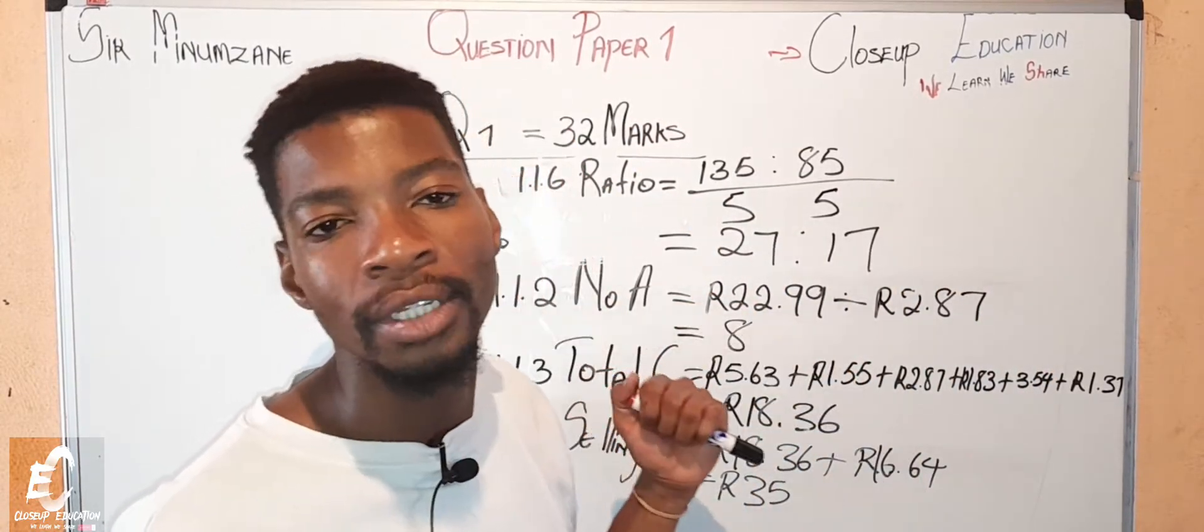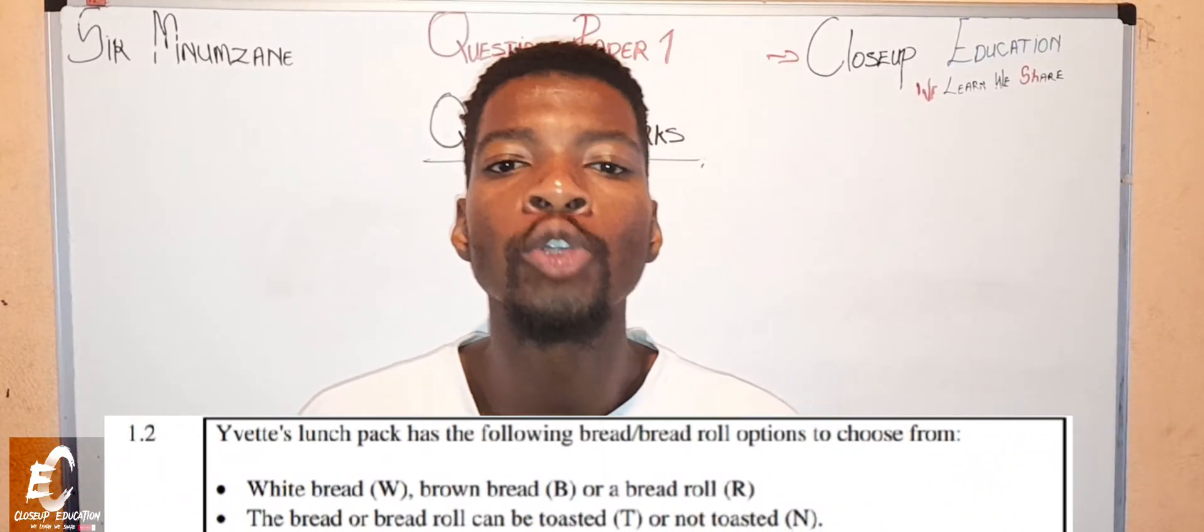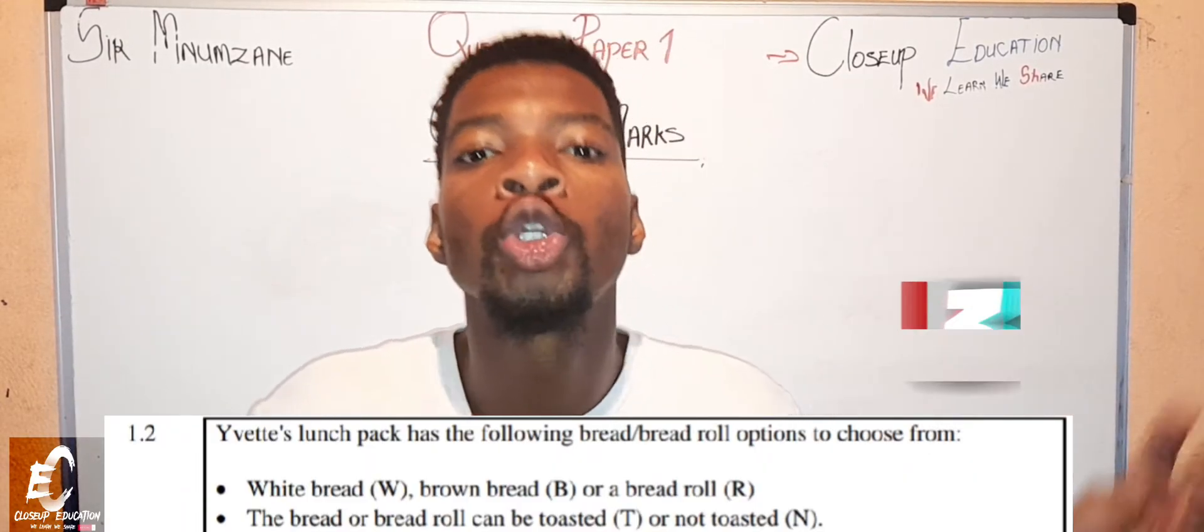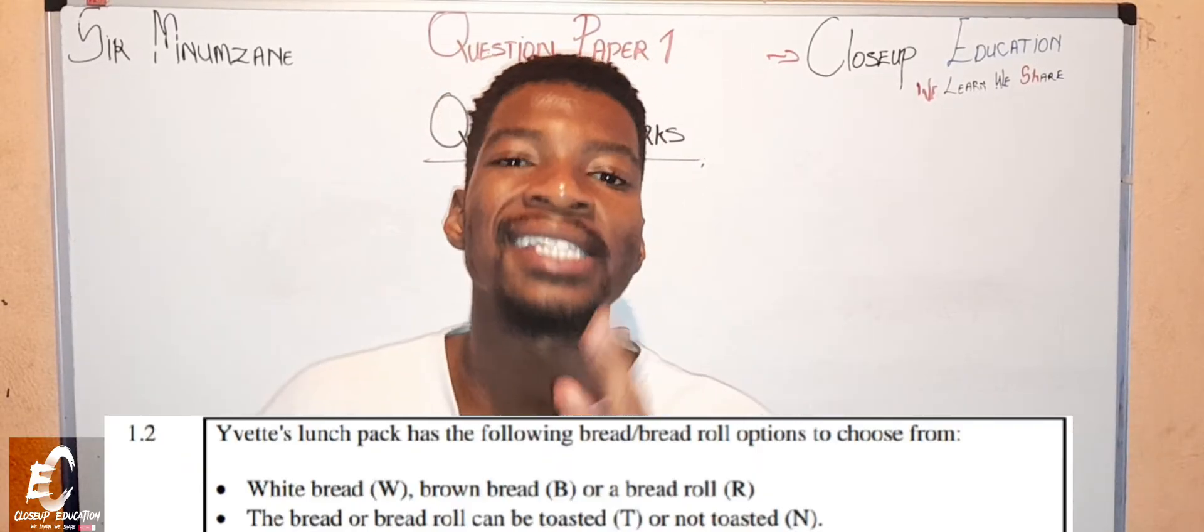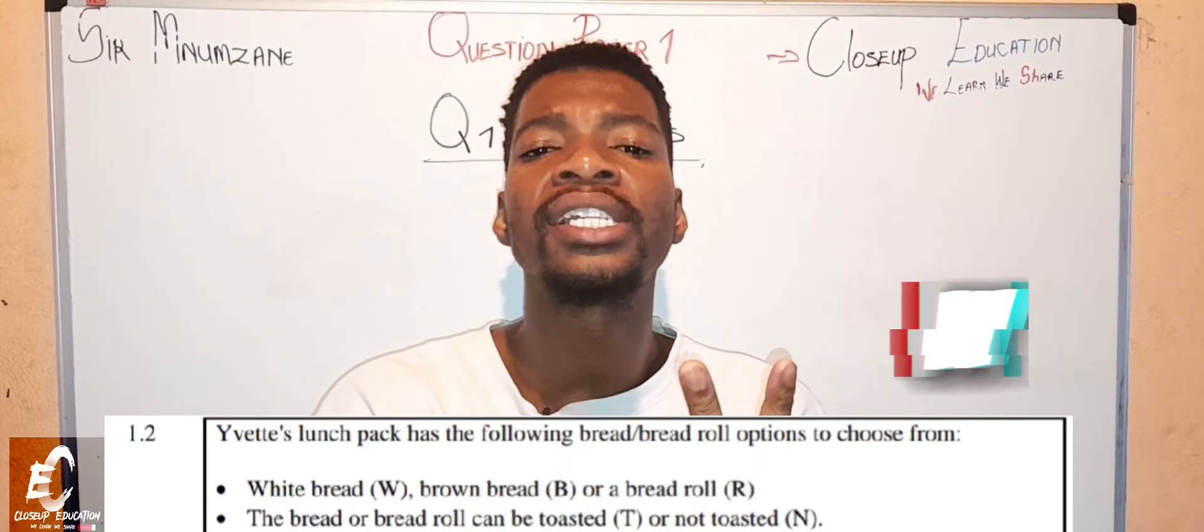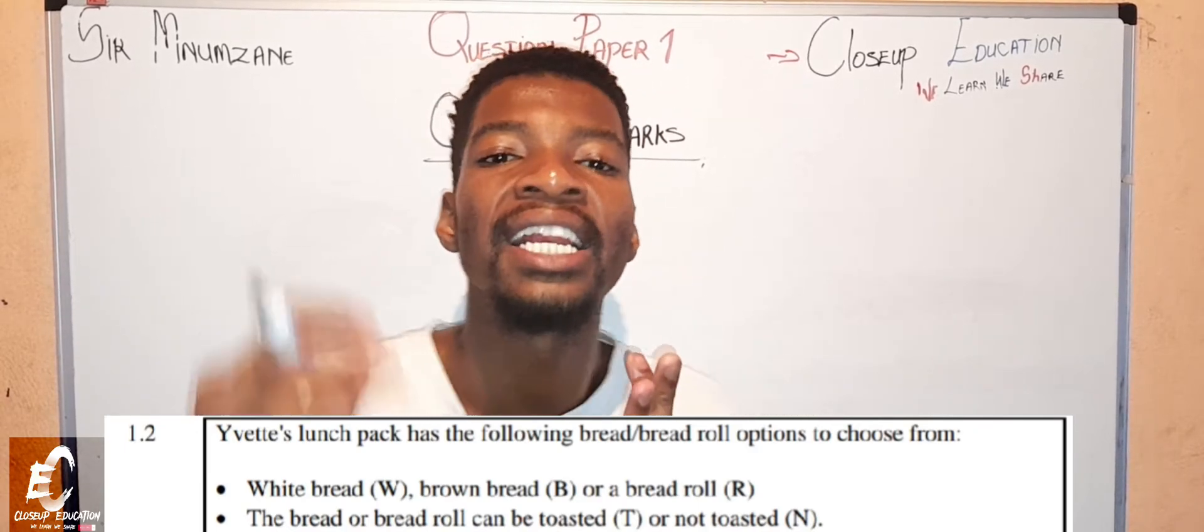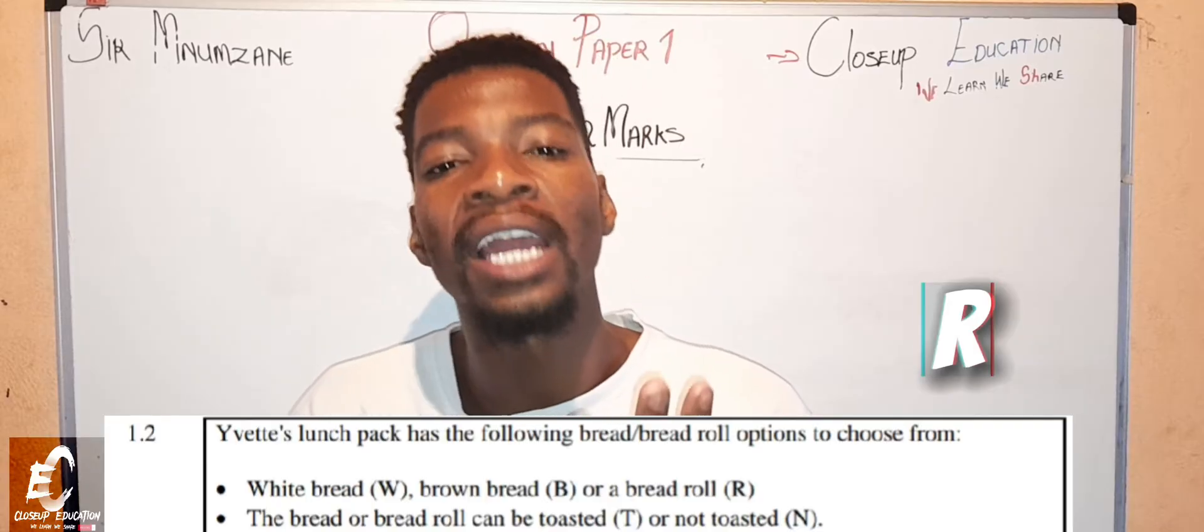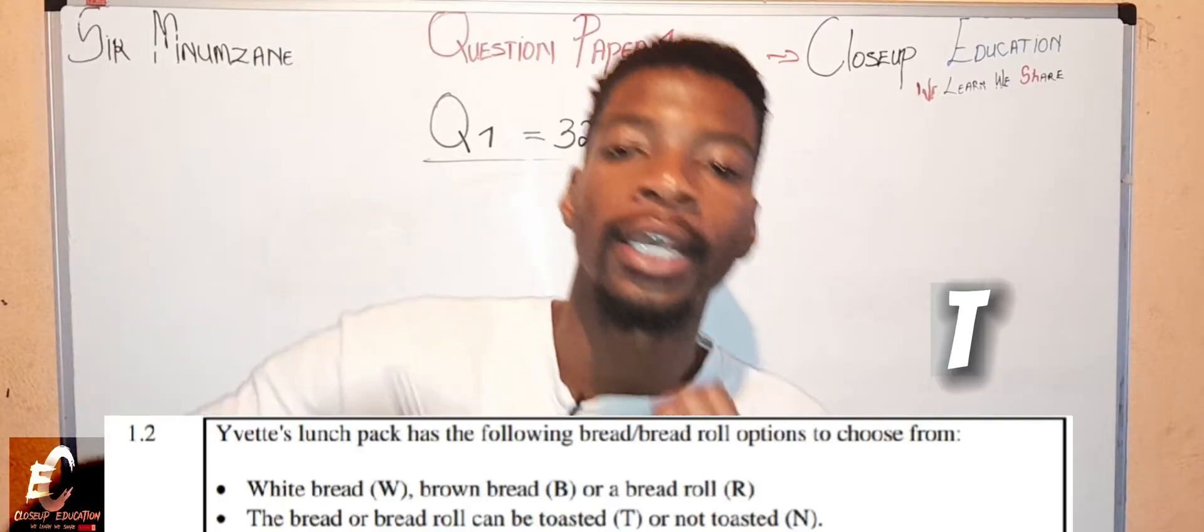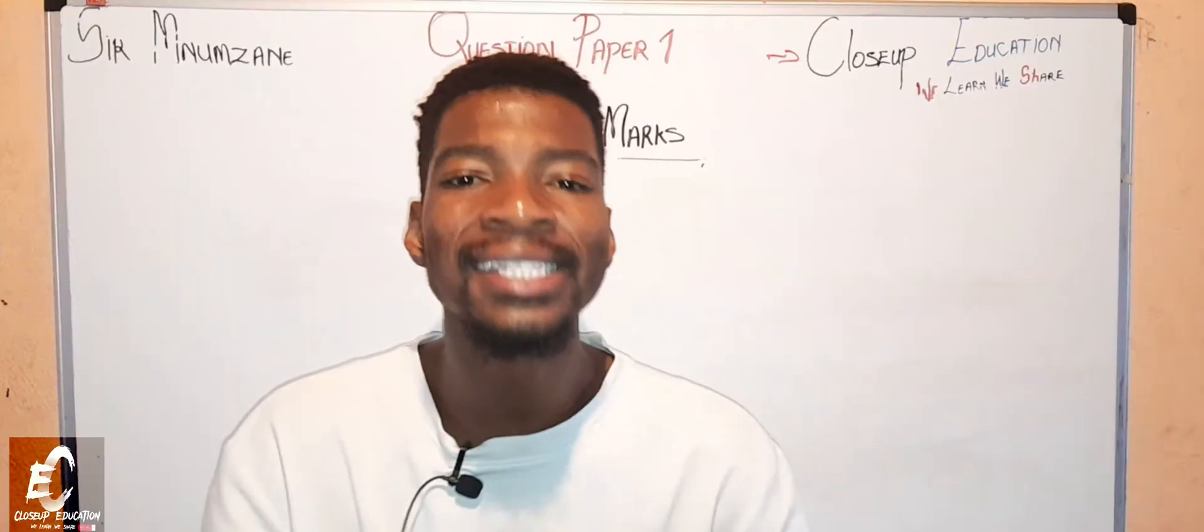Let's move to question 1.2. The scenario of 1.2 says Verdi has three bread and bread roll options to choose from in her lunch pack. There is white bread which is represented by capital letter W, there's the brown bread which is represented by the capital letter B, and there is the bread roll which is represented by the capital letter R. And these bread can be either toasted which is represented by the capital letter T or not toasted which is represented by the capital letter N.